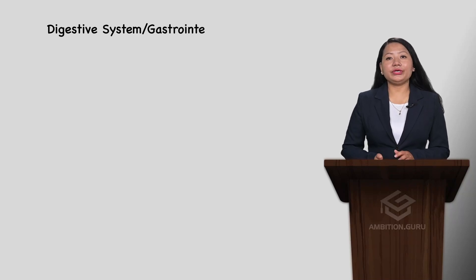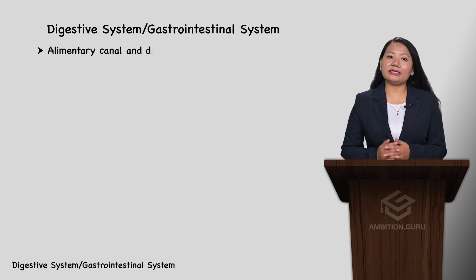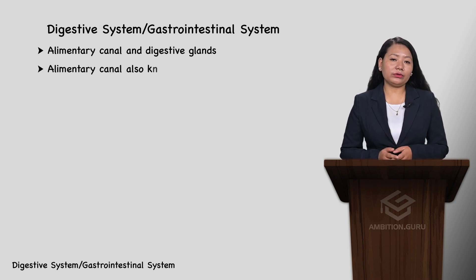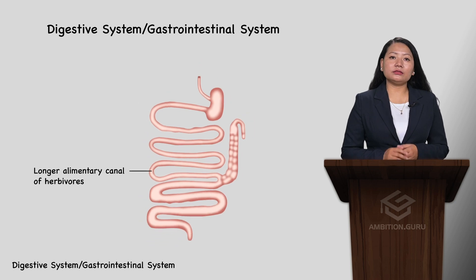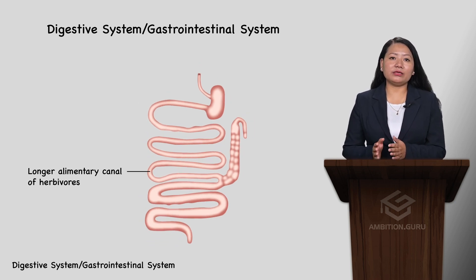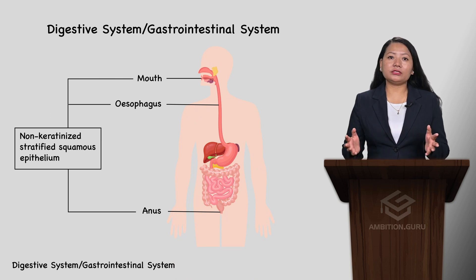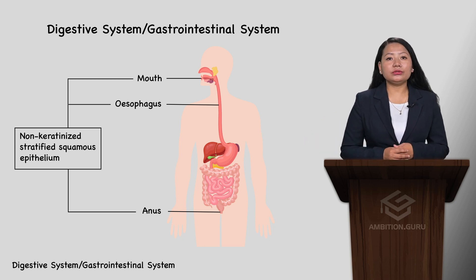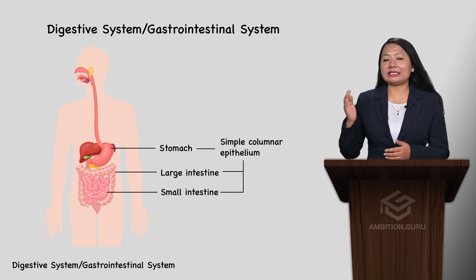The digestive system or gastrointestinal system consists of the alimentary canal and digestive glands. The alimentary canal is also known as the gastrointestinal tract, gut, or digestive tract. Among different animals, herbivorous animals have the longest alimentary canal. The alimentary canal is lined with different tissues: non-keratinized stratified squamous epithelium lines the mouth, oesophagus, and anus, while simple columnar epithelium lines the stomach, small intestine, and large intestine.